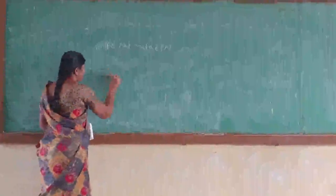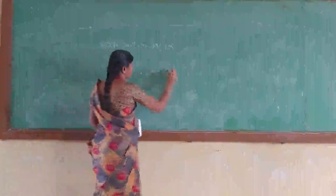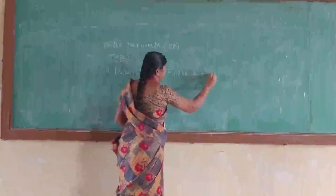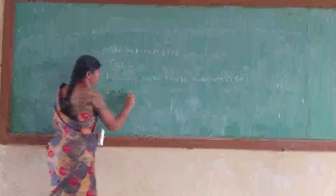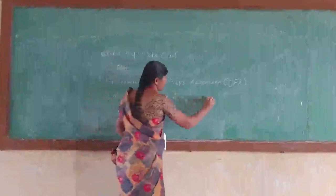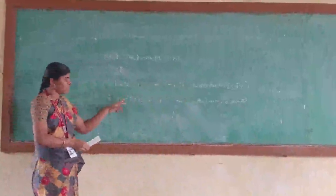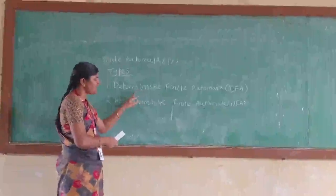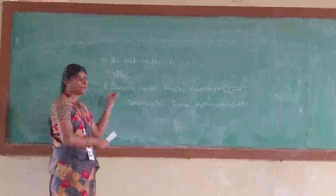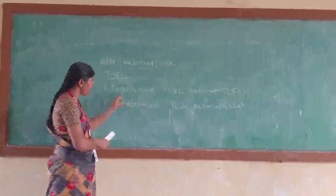In finite automata, we have two types: one is deterministic finite automaton (DFA) and the other is non-deterministic finite automaton (NFA). In a DFA, there will be only one transition for a given input in a given state. In an NFA, there can be more than one transition for a given input in the same state. This is the distinction between DFA and NFA.